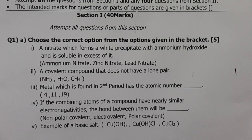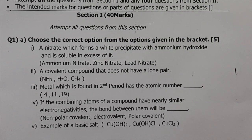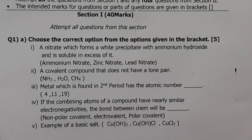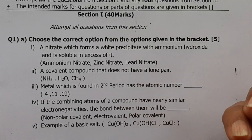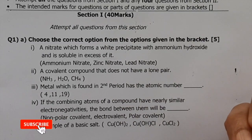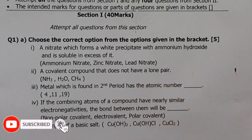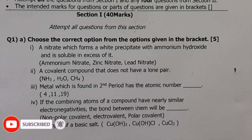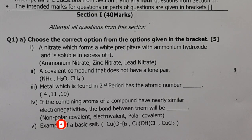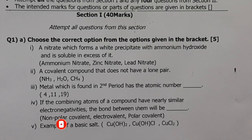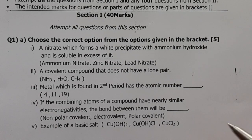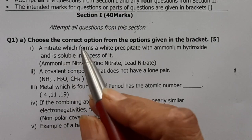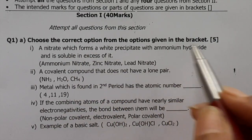Hello Class 10 students. This is a sample chemistry paper for Class 10 ICSE board — it's one of the prelim examination papers. It consists of Section 1, which is 40 marks, and Section 2, which is again 40 marks. You have to attempt four questions from Section 2; all questions in Section 1 are compulsory. Let us see how we handle this question paper.